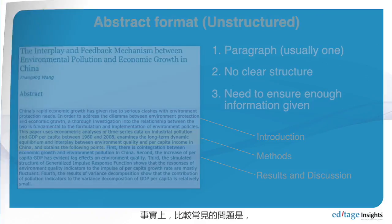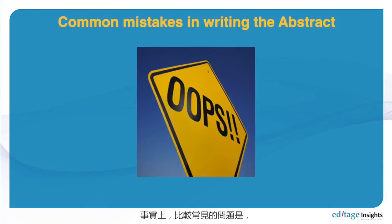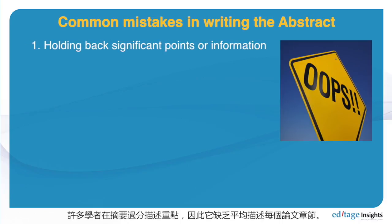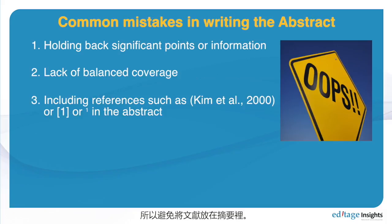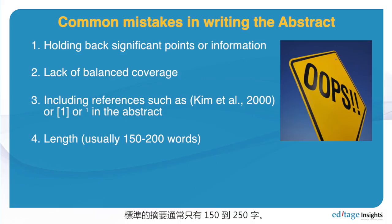The common problems with abstracts: the writer holds back significant points, resulting in a lack of balanced coverage. Avoid including references in your abstract — references typically belong in the main text. Some abstracts are also much too long. A standard abstract is 150 to 200 words; some people write up to 500 words, but it needs to be shorter than that.